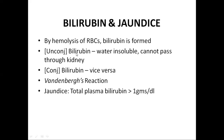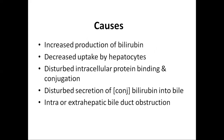Jaundice is defined as the increased level of plasma bilirubin more than 1 mg per deciliter. The causes of jaundice may be due to increased production of bilirubin by excessive hemolysis of RBCs, decreased uptake by the liver cells or hepatocytes, disturbed intracellular protein binding and conjugation of bilirubin, or disturbed secretion of conjugated bilirubin into the bile resulting in excessive bilirubin in the body. It can also be due to intra- or extra-hepatic bilirubin obstruction leading to obstructive jaundice.